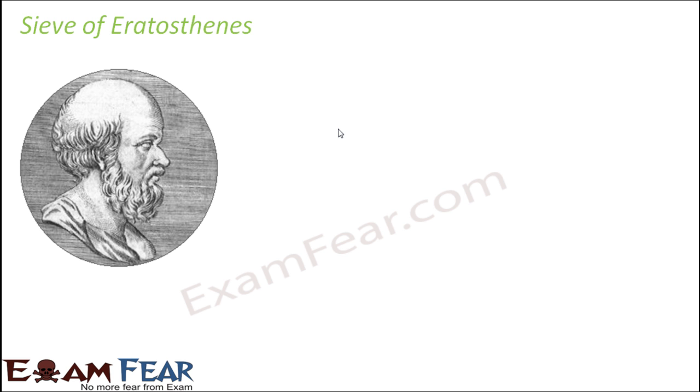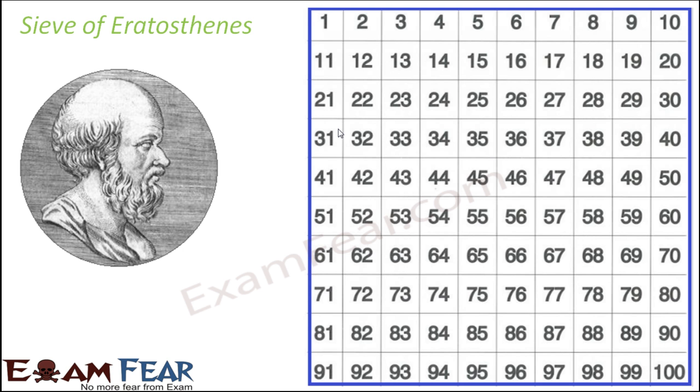Now you might think all of a sudden why are we talking about this sieve of Eratosthenes. Eratosthenes was a Greek mathematician. What he did was he wrote all the numbers from 1 to 100 in a chart, and then in this chart he actually described a method.